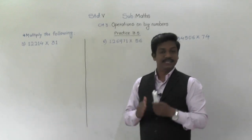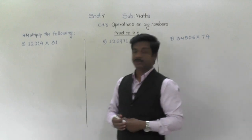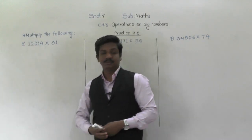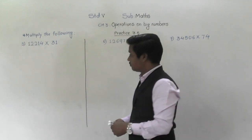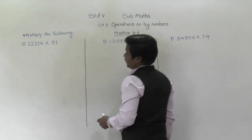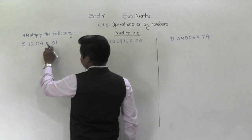Example number 4 is homework — you have to do it by yourself. Let's see example number 5: 12,214 into 31.